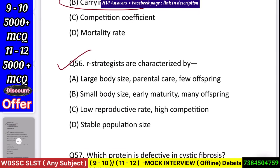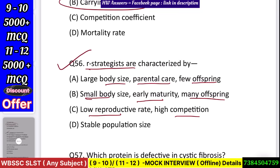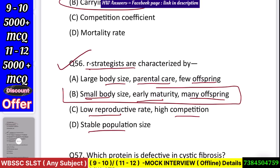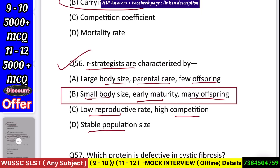Question number 57: r-strategies are characterized by — large body size, parental care, few offspring; or small body size, early maturity, many offspring; or low reproductive rate, high competition, stable population size? Answer: small body size, early maturity, many offspring.